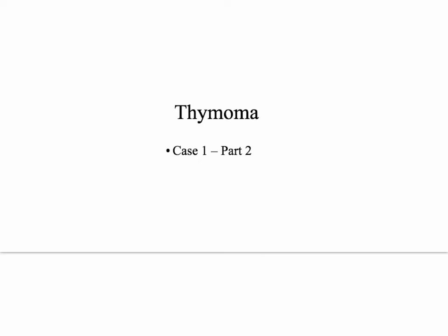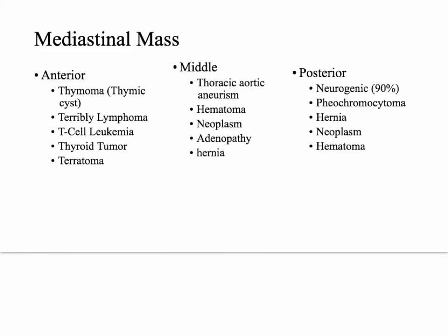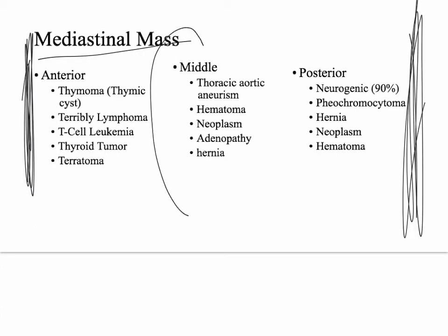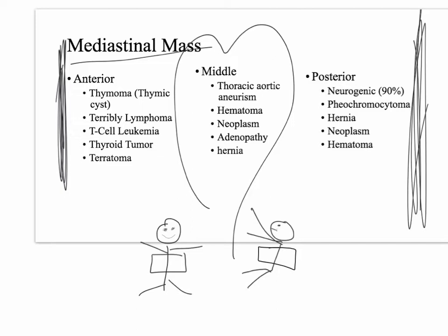Continuing on with case one, we're going to talk about thymomas. When you do a chest x-ray and you see a mass, you're going to see a mediastinal mass, and there's a differential diagnosis. Think of this as the sternum over here, the spine, and the heart right here. What typically happens is you take an x-ray, see a mass in the mediastinum, then get the lateral view to find out if it's in the anterior, middle, or posterior.